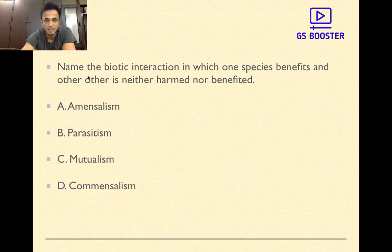Now the next question: Name the biotic interaction in which one species benefits and the other is neither harmed nor benefited. Amensalism, parasitism, mutualism, commensalism. The answer is D, commensalism. In commensalism one is benefited, other is not affected. In amensalism one is negatively affected and the other is not affected at all. In parasitism one is positively affected and one is negatively affected. And in mutualism both are positively affected.